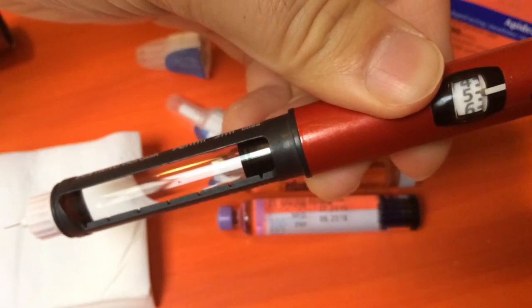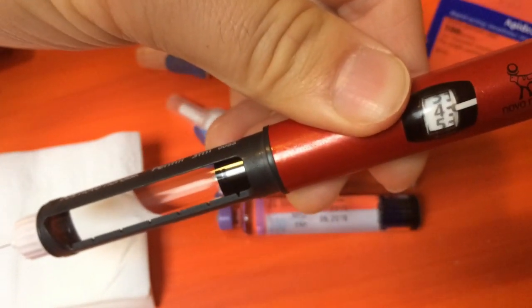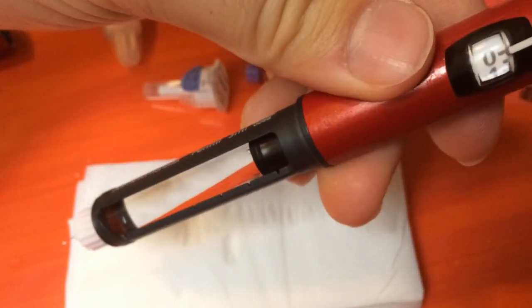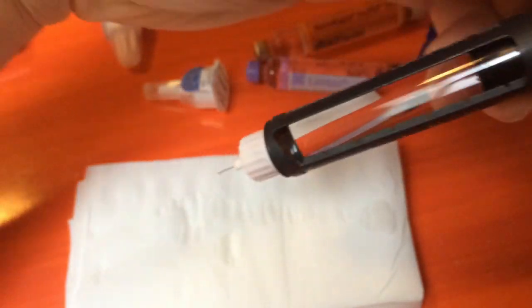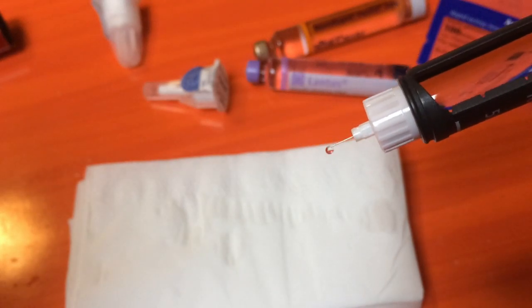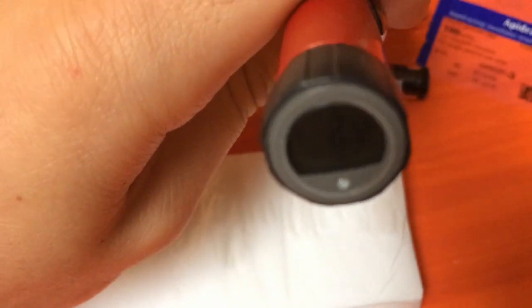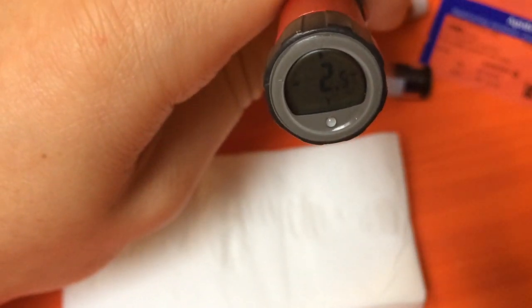Now we're going to prime it. Get the tissue in. There we are. As you can see, it's telling me two and a half units just put in.